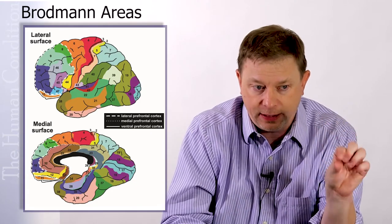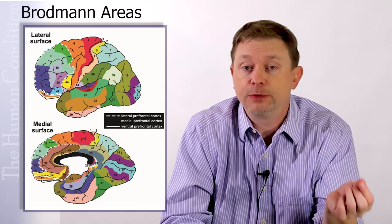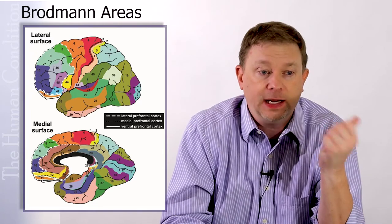And he was able to figure out what areas did certain things and what they were responsible for. And so we carry that today with these numbers, these Brodmann area numbers like Brodmann area seven and Brodmann area six. These are areas of cortex of the brain, both surface and deep.